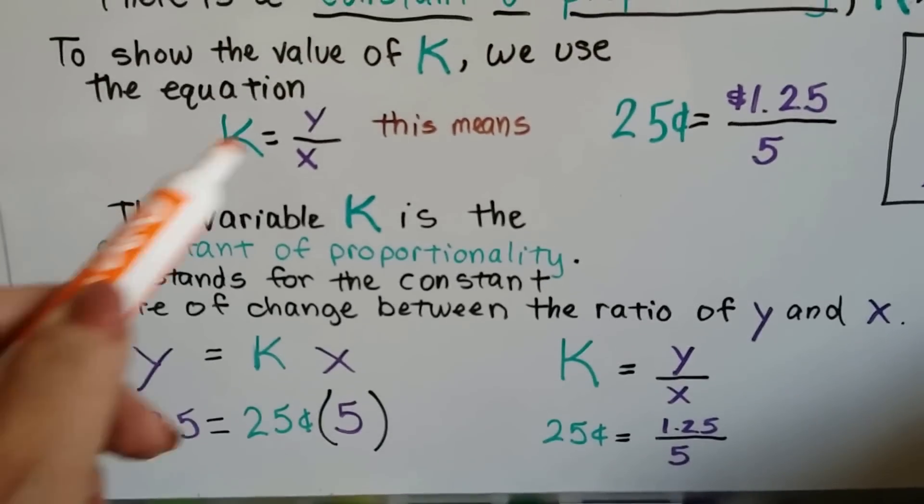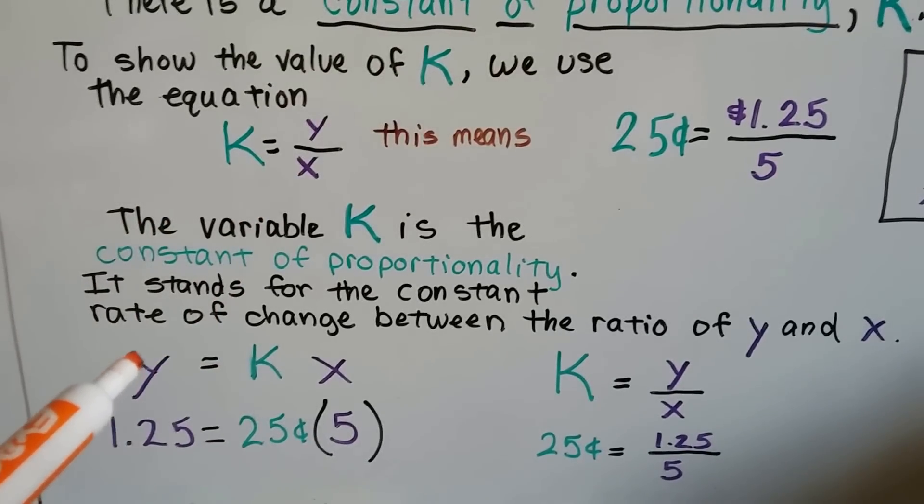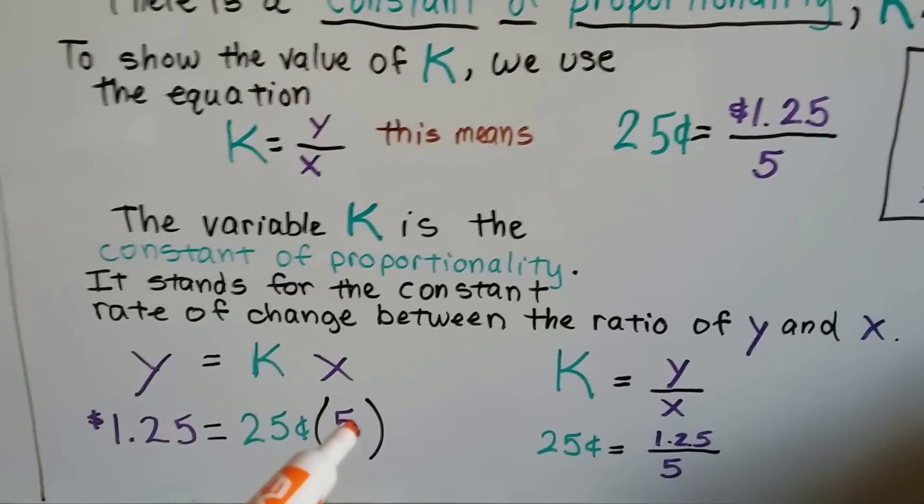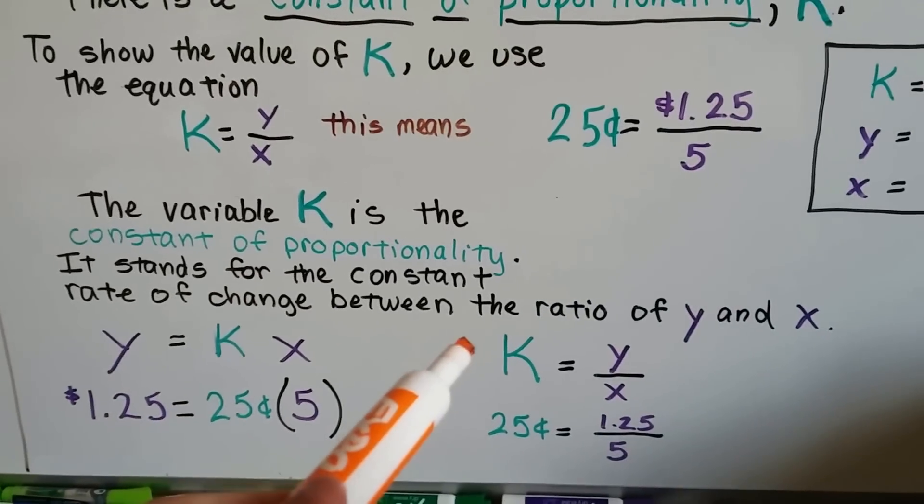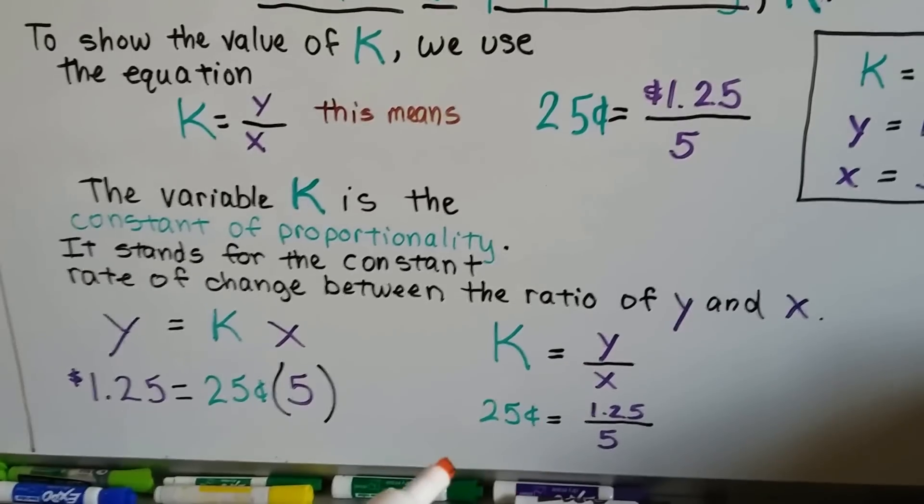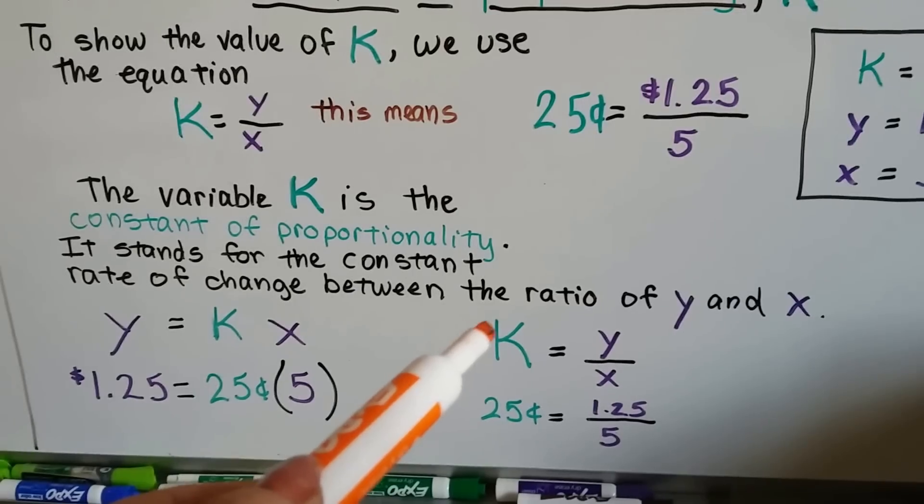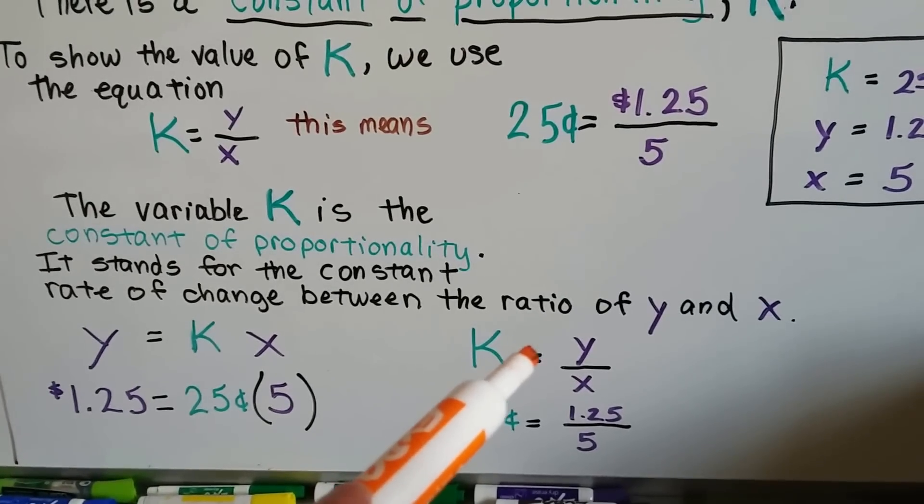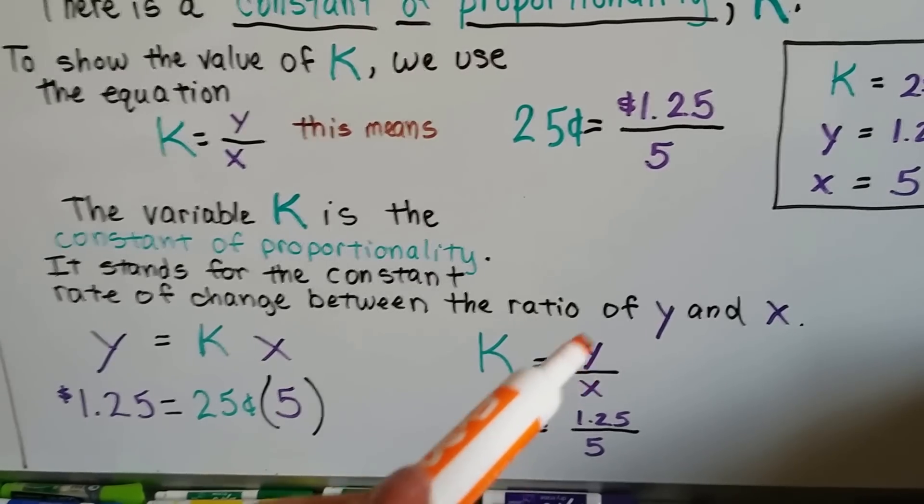We can also rearrange this equation and say Y = KX. That would be $1.25 = $0.25 times 5. So you'll see K = Y/X, which means the constant equals the ratio of Y and X.